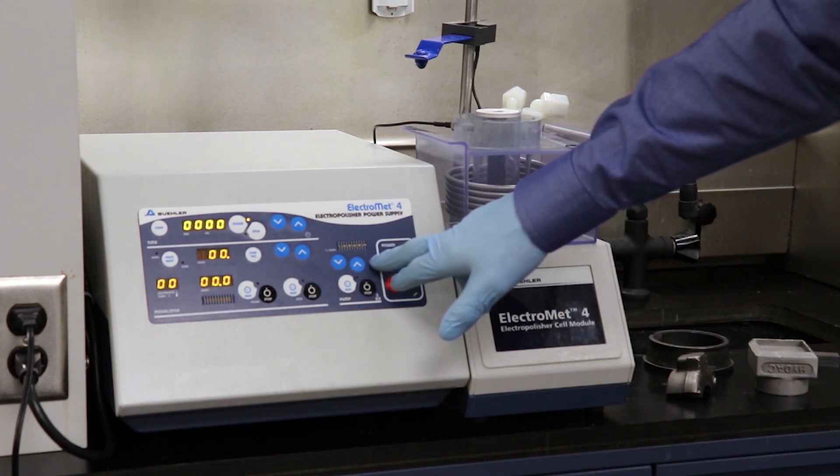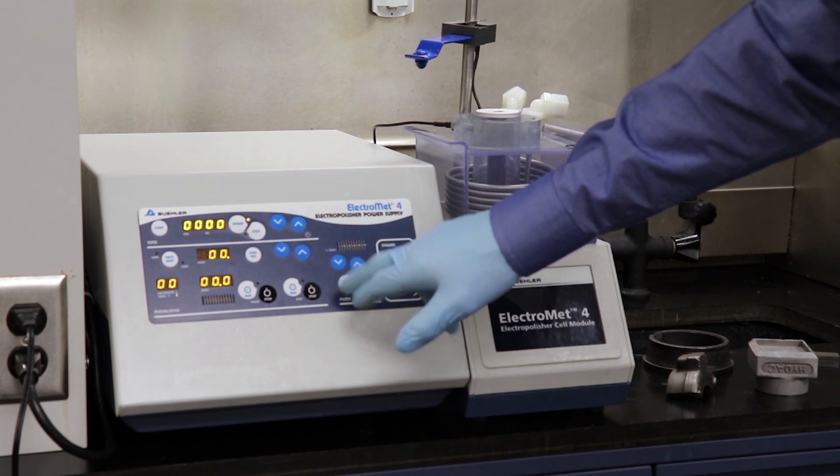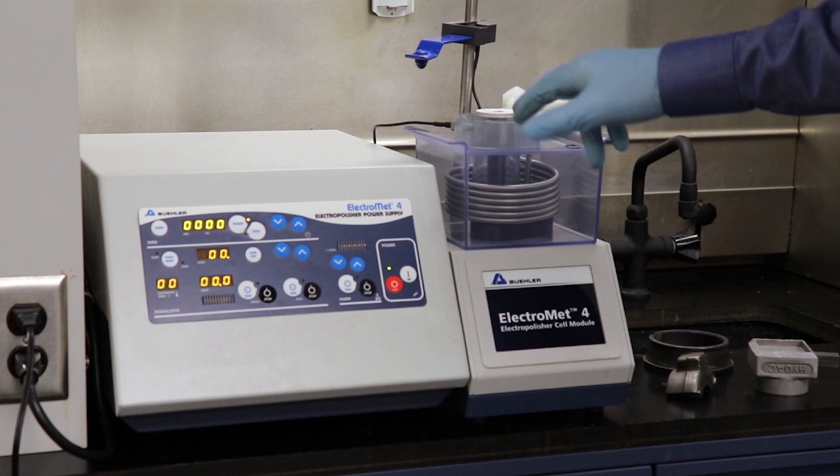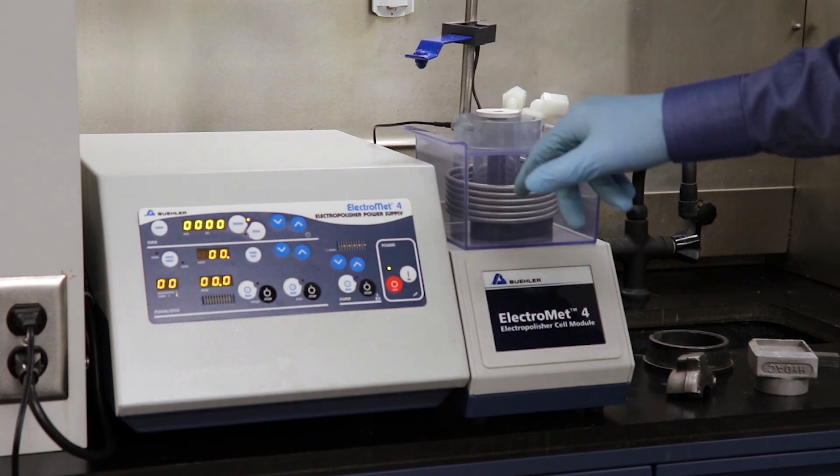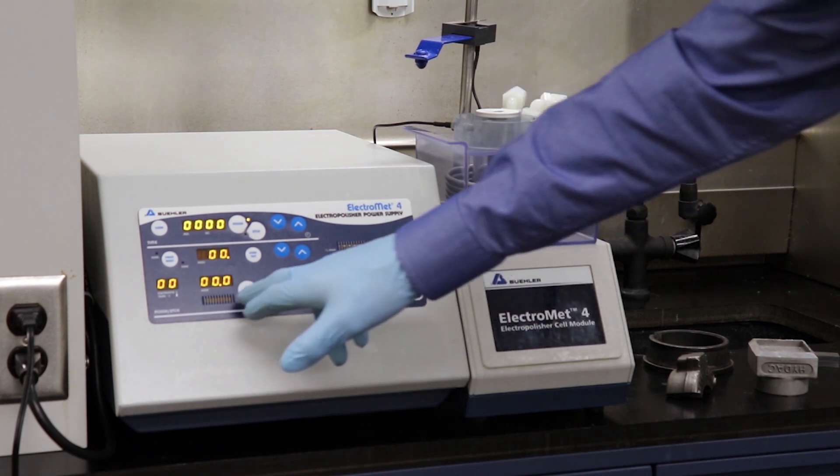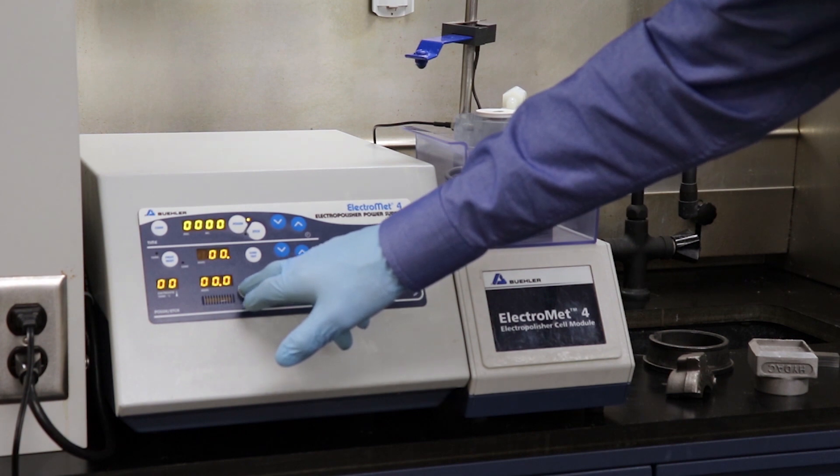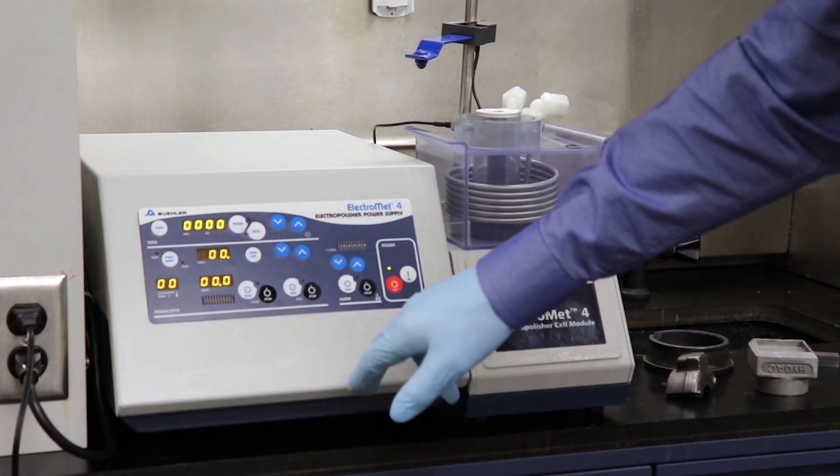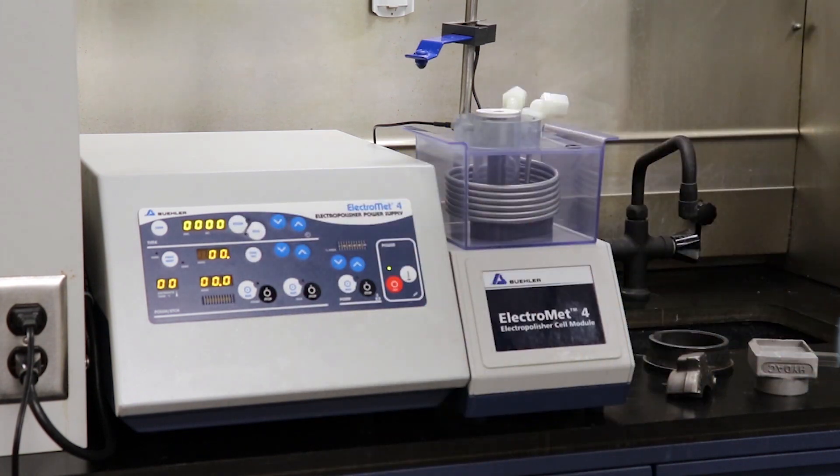We're going to set our control parameters. We have our pump over here which is going to drive the electrolyte through the cathode and enable that to make contact with the sample. And over here we're simply going to set our voltage for our etching and polishing cycles and our etching and polishing time.